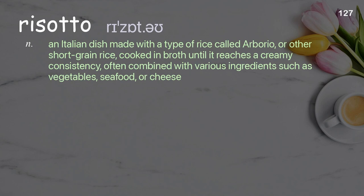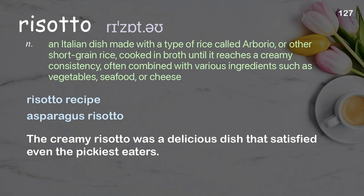Risotto: an Italian dish made with arborio or other short grain rice cooked in broth until it reaches a creamy consistency, often combined with various ingredients such as vegetables, seafood, or cheese. Examples: risotto recipe; asparagus risotto. The creamy risotto was a delicious dish that satisfied even the pickiest eaters.